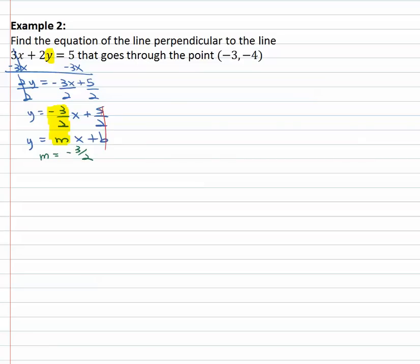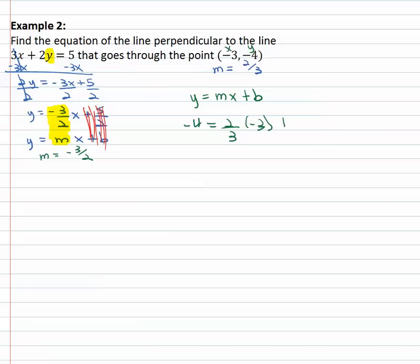Again, we don't care about the b — all we care about is the slope. Because if this line has a slope of negative 3 halves, we can find the slope of our perpendicular line as the opposite reciprocal. This one's negative, so the opposite is a positive slope, and the reciprocal is 2 thirds. So we want the equation of the line with slope 2 thirds going through negative 3 as x and negative 4 as y. We plug that into y equals mx plus b to find the y-intercept.